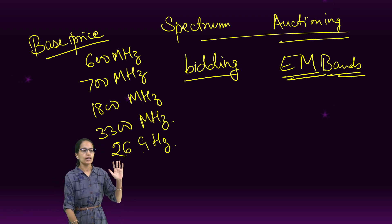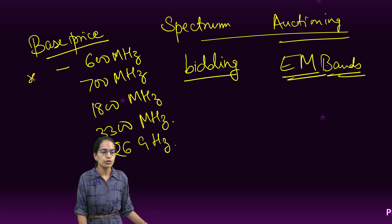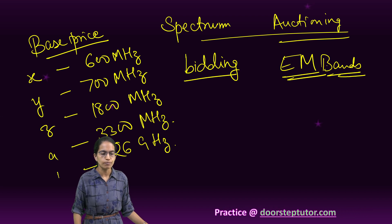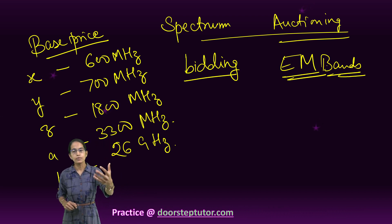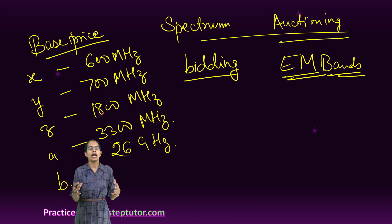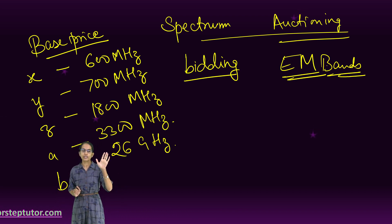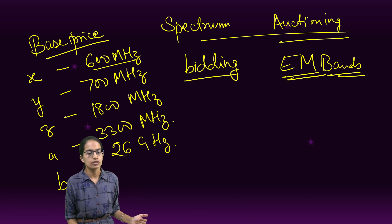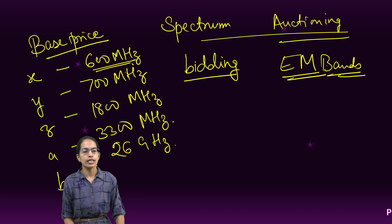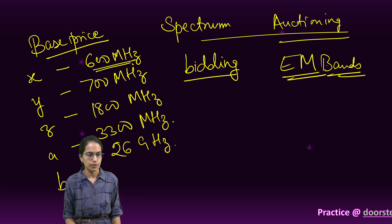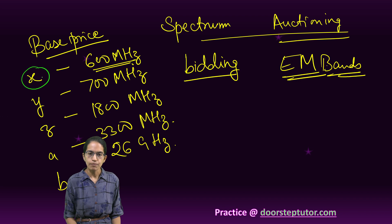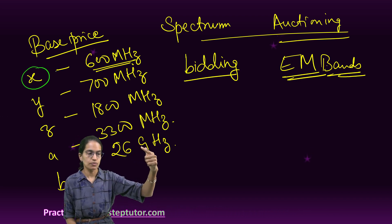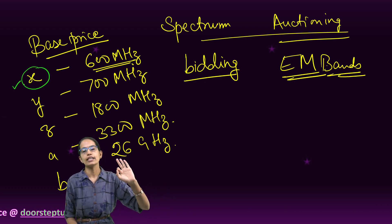The government puts a base price for each of these bands — X amount, Y amount, Z amount, and so on. Companies then come and go for an auction. For example, for 600 megahertz, if no company is willing to pay more than the base price and none of the companies want this band, there is no rise in the auction price and it would be sold only at the base price.